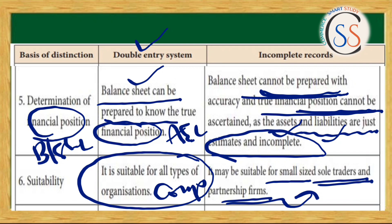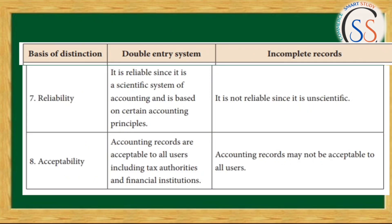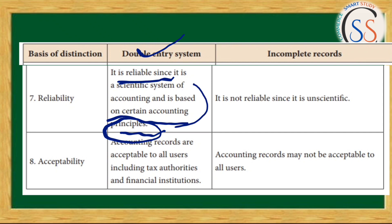The seventh difference is reliability. The Double Entry System is reliable since it is a scientific system of accounting based on accounting principles — following real account, nominal account rules — making accounts perfect. The Single Entry System is not reliable because it is unscientific, does not follow proper rules and principles, and is unsystematic.